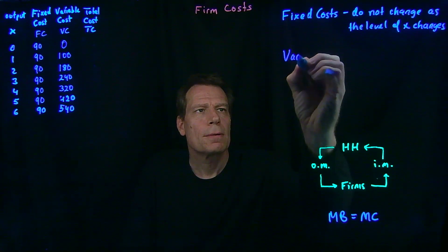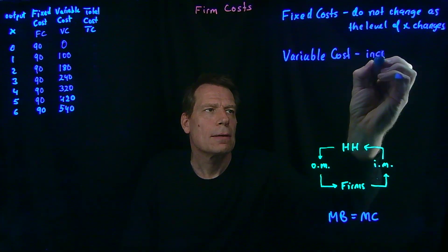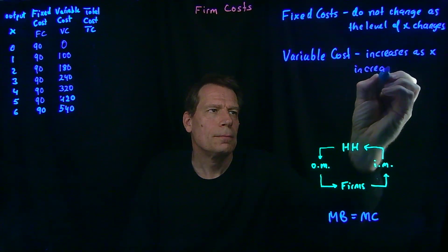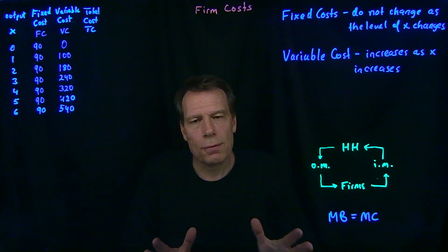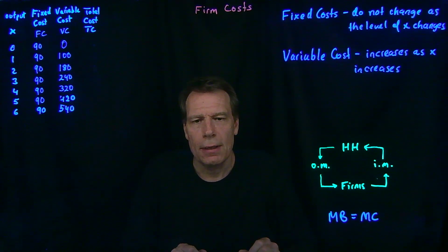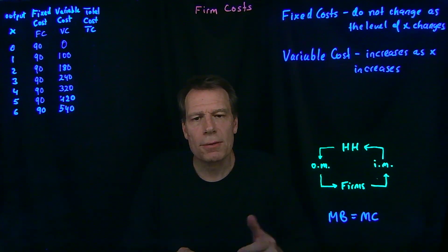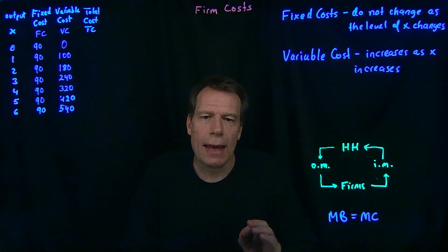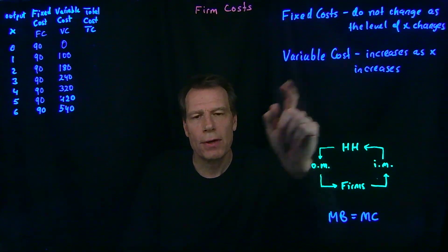Then we have variable costs. A variable cost increases as output x increases. Think, for example, about your labor costs in your restaurant. If you decide not to serve any meals and just keep the space closed, you don't have to hire any workers — you'll have zero labor costs. But the more meals you serve, the busier the restaurant gets, the more labor you're going to have to hire — more cooks, waiters, hostesses, and so forth. So as output increases, your labor costs are going to increase. Labor costs are a variable cost for your restaurant.